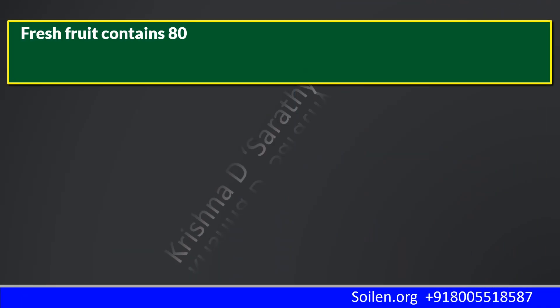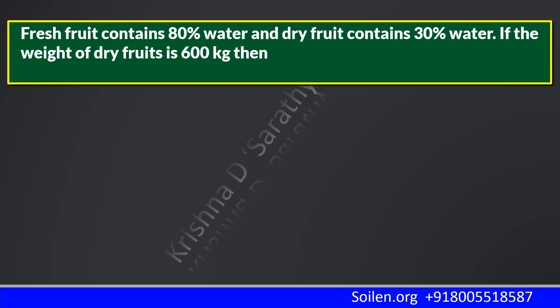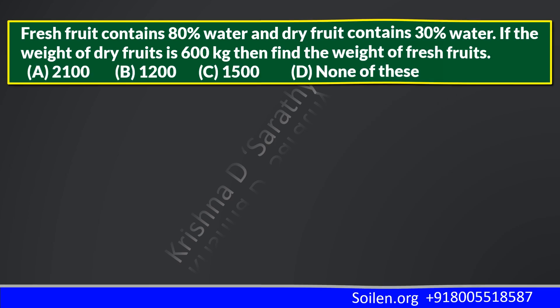Fresh fruit contains 80% water and dry fruit contains 30% water. If the weight of dry fruits is 600 kilograms, then find the weight of fresh fruits.